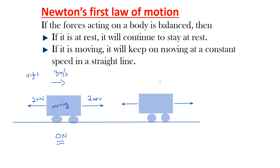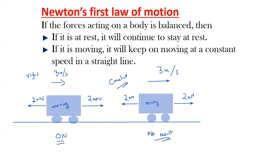An object will continue to move with the same speed if it is originally moving, and it will continue to move until there is a resultant force. If there is no resultant force, the object will continue to move with a constant speed. This is the second statement of Newton's First Law: a moving object will keep moving at a constant speed in a straight line when the forces are balanced.